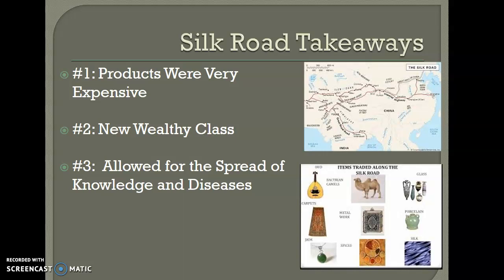The second takeaway is a new wealthy class. In the Middle Ages, wealth was based off of land — you had to own land. But when we're talking about the movement of expensive products like carpets, jade, spices, silk, and glass, you can make so much money selling those things that you don't need land to be rich anymore. You can be rich based off what you buy and sell. So a new landless class of people begins to emerge — meaning the upheaval and end of feudalism.